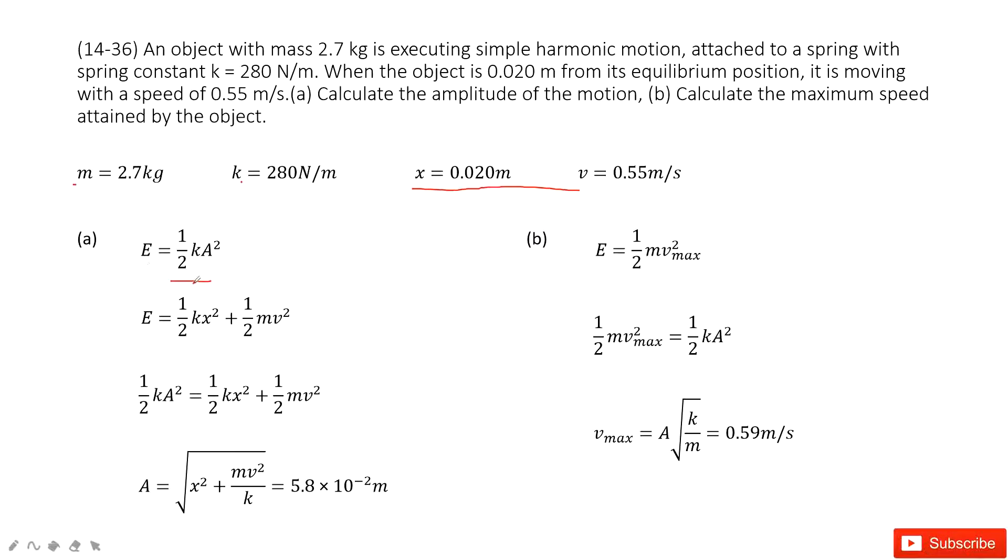So at the end, the energy is one-half k A squared. And at the distance x equal to 0.02 meters, the velocity is given, its energy should include the potential energy and the kinetic energy. This energy is conserved, so we get this function.